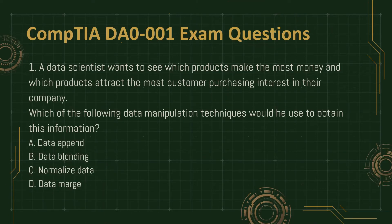Question 1: A data scientist wants to see which products make the most money and which products attract the most customer purchasing interest in their company. Which of the following data manipulation techniques would he use to obtain this information? A. Data append. B. Data blending. C. Normalize data. D. Data merge.